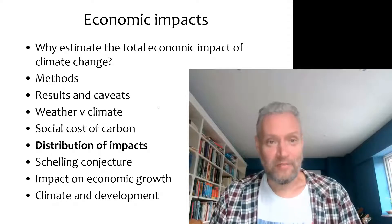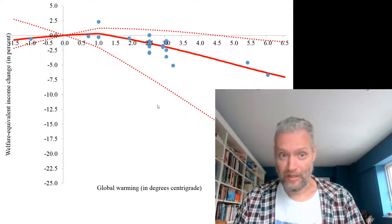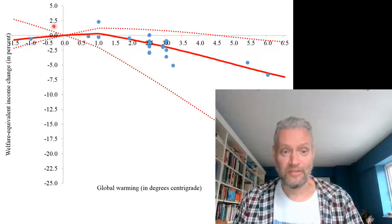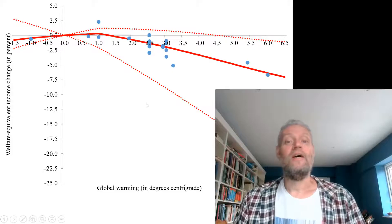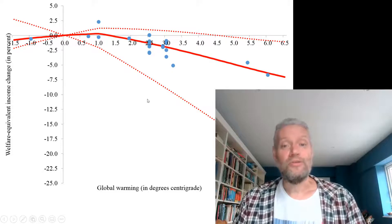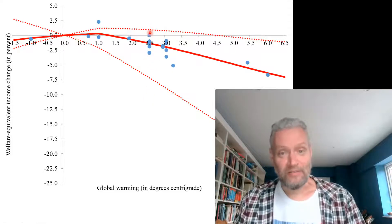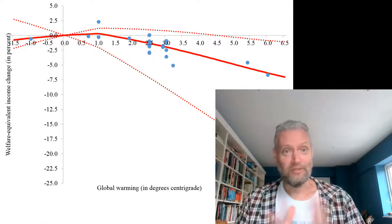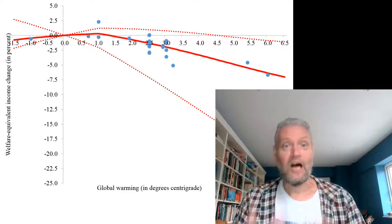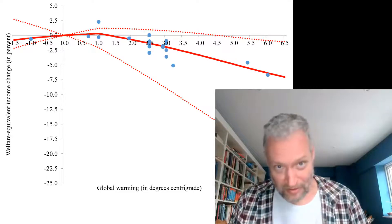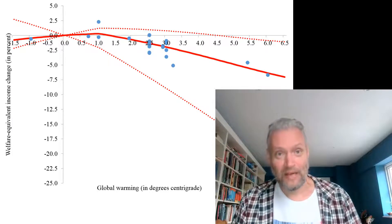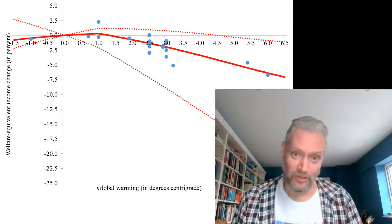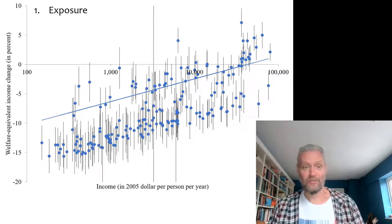I talked about the total economic impact of climate change, but I haven't talked about the distribution. We've seen this graph before, which shows the severity of climate change as a function of climate change itself. What I'm going to do is take this set of numbers, which shows the impact of 2.5 degrees of global warming on the average person across the world, and instead show the impact on people across the world.